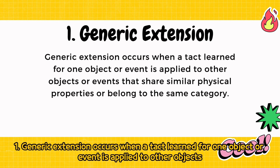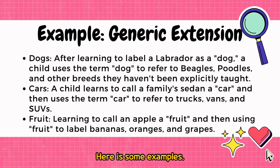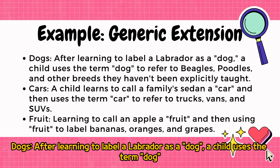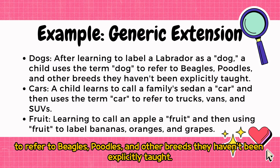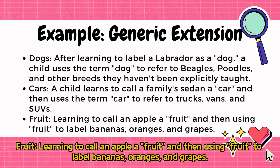1. Generic extension occurs when a tact learned for one object or event is applied to other objects or events that share similar physical properties or belong to the same category. Examples: Dogs — after learning to label a Labrador as a dog, a child uses the term 'dog' to refer to beagles, poodles, and other breeds they haven't been explicitly taught. Cars — a child learns to call a family sedan a car and then uses the term to refer to trucks, vans, and SUVs. Fruit — learning to call an apple a fruit and then using 'fruit' to label bananas, oranges, and grapes.